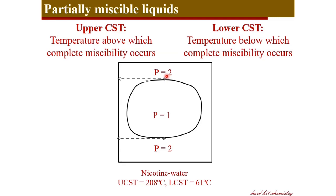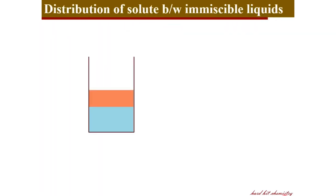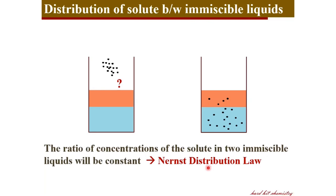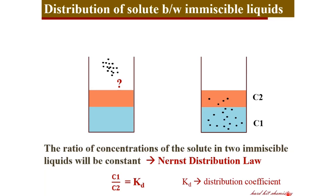That covers critical solution temperature — upper, lower, and systems having both upper and lower CST values. Now let's consider what happens when you have two immiscible liquids and add a solute. The solute gets distributed into the two liquids in different fractions. That distribution is described by Nernst's distribution law, which states that the ratio of concentrations of the solute in the two immiscible liquids is constant at a given temperature. If solute concentration is C₁ in phase one and C₂ in phase two, and those phases are at equilibrium, the ratio C₁/C₂ is a constant Kd, called the distribution coefficient.